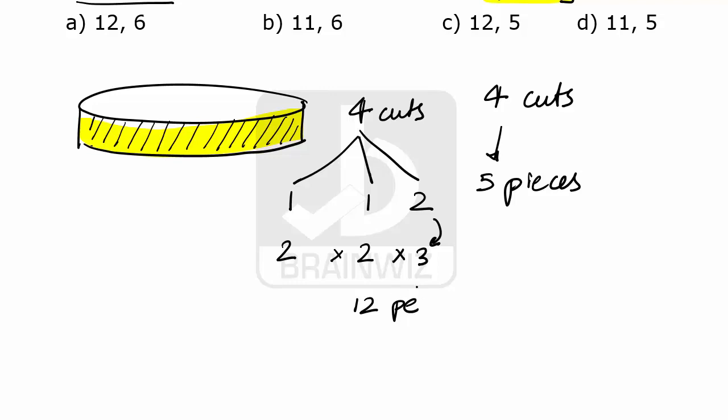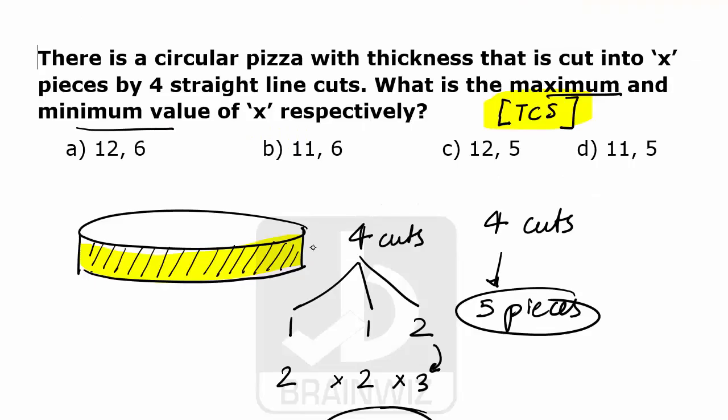These 12 pieces are the maximum pieces and these five pieces are the minimum pieces which we can find. So coming from options, option C is the perfect answer.